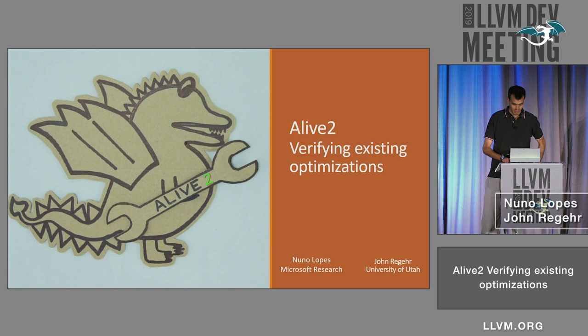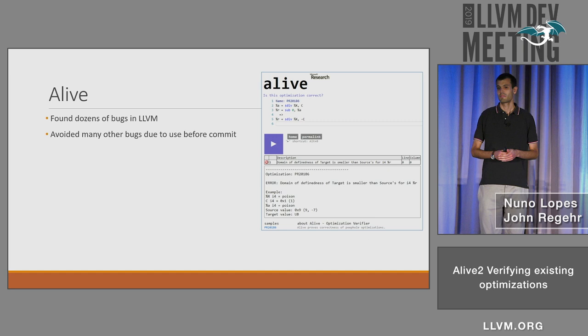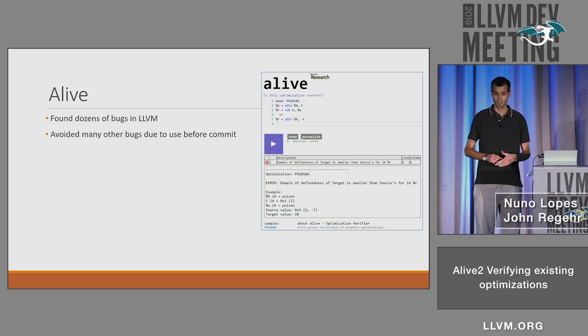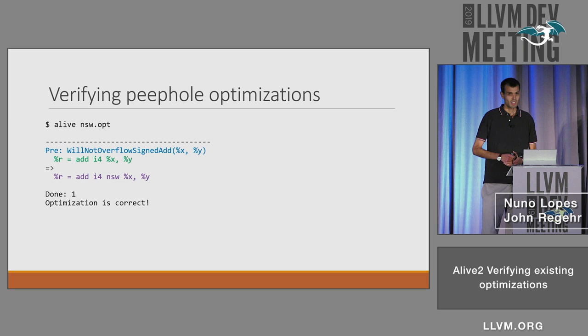Today we'll talk about Alive 2. But before we move on, I want to spend a couple of minutes on Alive for those who don't know. Alive has already found dozens of bugs in LLVM. It's probably most well known these days through this small website, Rise for Fun. You go there, write your optimization, click the play button, and it'll tell you if you have a bug or if it's correct.